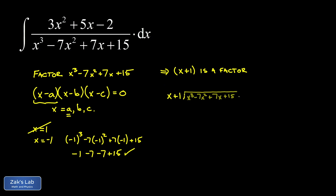We set up polynomial long division, trying to find a quadratic that multiplies by x plus one to give the original polynomial x cubed minus 7x squared plus 7x plus 15. Starting in the x squared position: the leading term is x squared, because distributing to x plus one gives x cubed plus x squared, matching the leading term. Subtracting leaves negative eight x squared plus 7x plus 15.